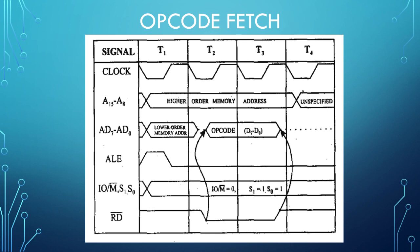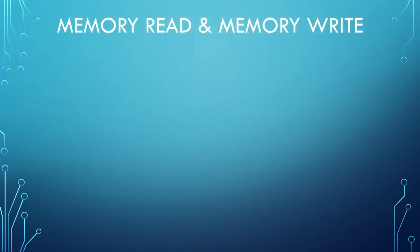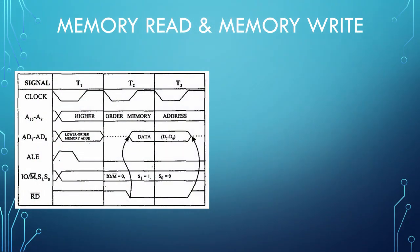IOM bar will have low value throughout the cycle because it is a memory related operation. Being an opcode fetch machine cycle, S0 and S1 will have high value — 11 — as discussed in the previous table. As this is a memory read operation, only the read bar control signal will be used, and read bar will have low value for 2 clock cycles T2 and T3 when there is data on the address-data bus.